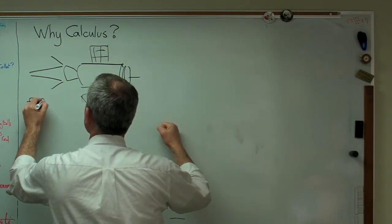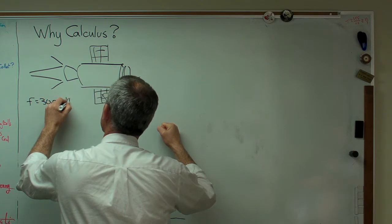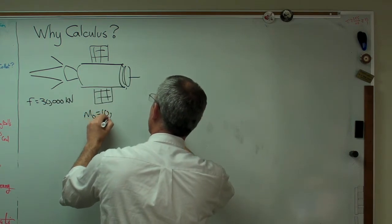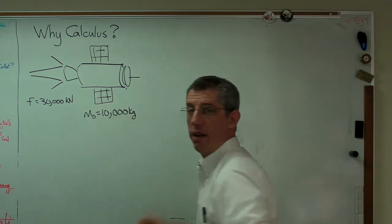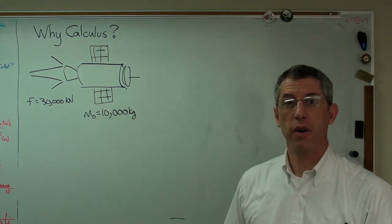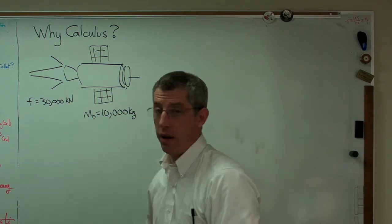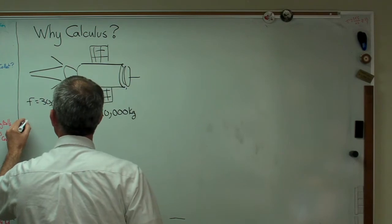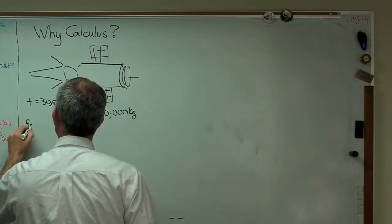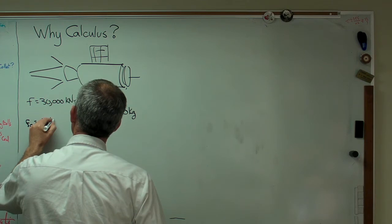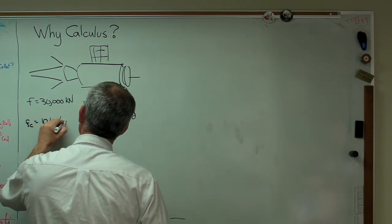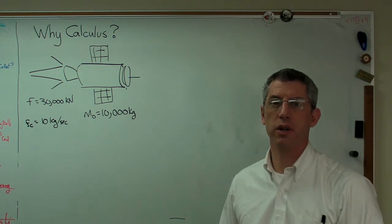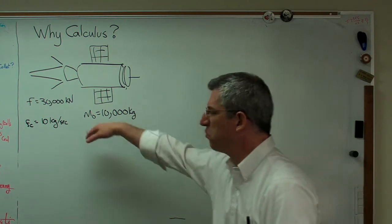The thrust from the engine, the force, is 30 kilonewtons. The initial mass of the space probe is 10,000 kilograms. Now the thing about rocket engines is they make an awful lot of thrust but they also burn an awful lot of fuel. So fuel consumption, FC, is 10 kilograms per second. I've based this off notional rocket engines - there's actually one called a SpaceX Kestrel that's pretty close to this.